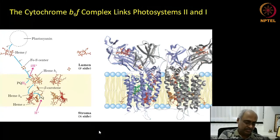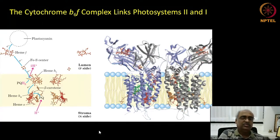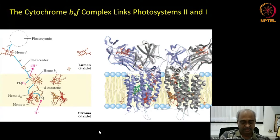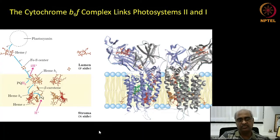Next let us look at the cytochrome b6f complex itself, which is equivalent to mitochondrial complex 3. We have already seen this with purple bacteria, which has only photosystem 2, and green sulfur bacteria, which has only photosystem 1. In both cases, electrons from the excited state flow via the cytochrome b6f complex back to the reaction center.